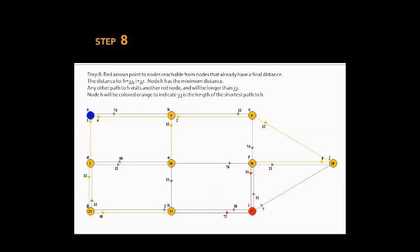Step 8: Red arrows point to nodes reachable from nodes that already have a final distance. The distance to H is equal to 33, and I is equal to 37. Node H has the minimum distance, which is 33. Any other path to H visits another red node and will be longer than 33. Node H will be colored orange to indicate that 33 is the length of the shortest path to H.